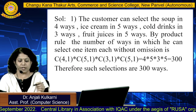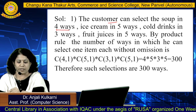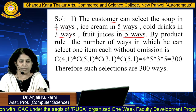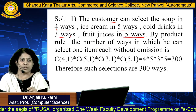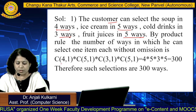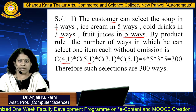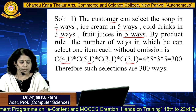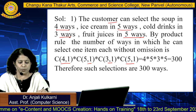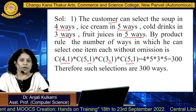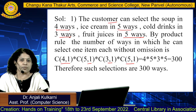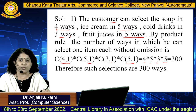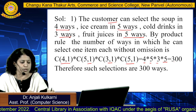For the first condition, the customer can select soup in 4 ways, ice cream in 5 ways, cold drinks in 3 ways, and fruit juices in 5 ways. By the product rule, the number of ways to select 1 item from each group without omission is: select 1 out of 4, select 1 out of 5, select 1 out of 3, and select 1 out of 5. For example, selecting 1 out of 5 is calculated as 5! / ((5-1)! × 1!) = 5. So the final answer is 4 × 5 × 3 × 5 = 300 ways.